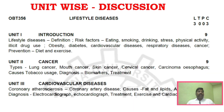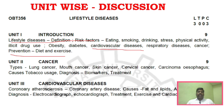In the first unit of Lifestyle Diseases, the important topics are risk factors. These two are important factors: risk factors of lifestyle diseases, and prevention of lifestyle diseases through diet and exercise.